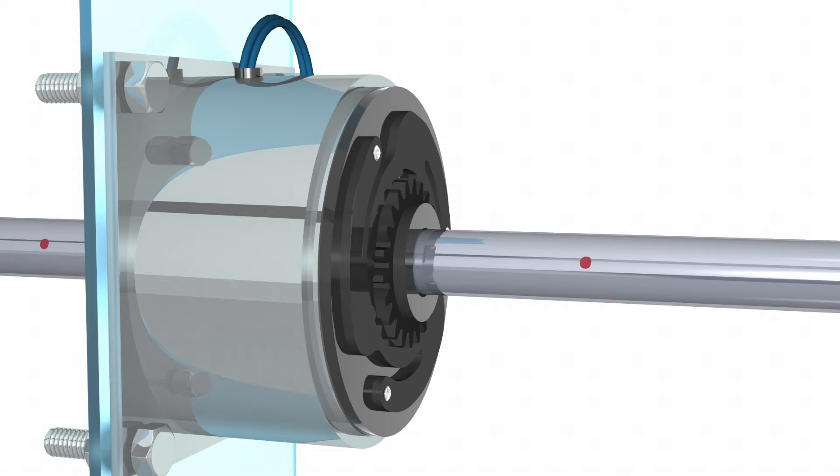Electromagnetic brakes. The majority of electromagnetic brakes use a single plate friction surface to slow or stop motion. Although there are multiple disk designs, all function in a similar manner.